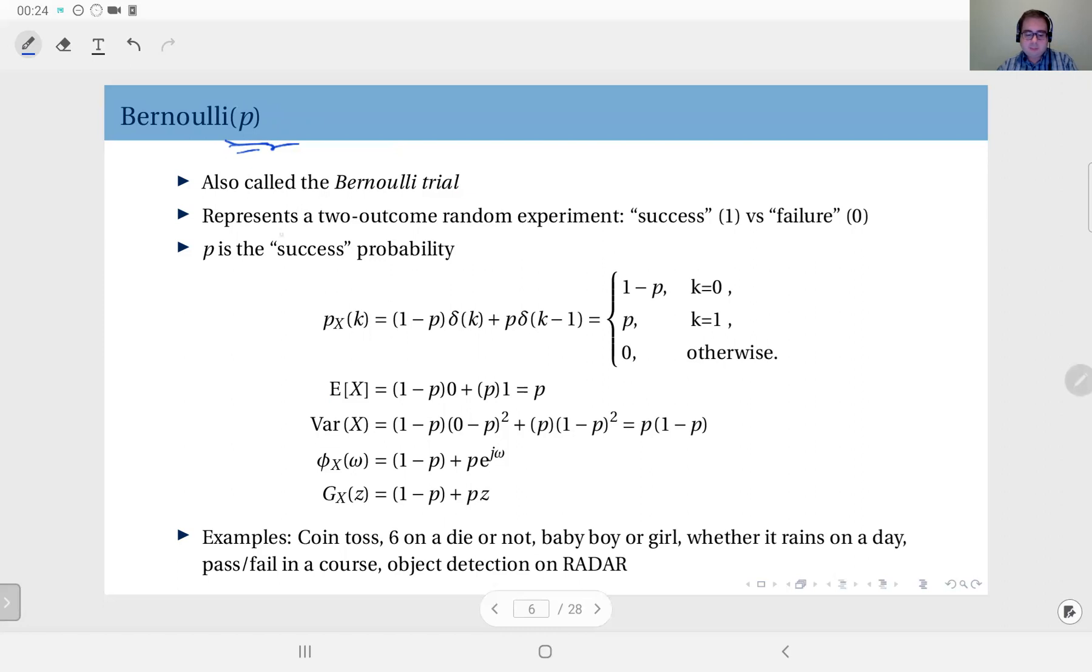Which is what? What is the Bernoulli trial? The Bernoulli trial represents a two-outcome random experiment: success versus failure. So these are the terminology we use to address these possible outcomes. For the definition of the random variable, we use the outcomes 1 and 0. The probability assigned to success, which is represented by 1, is p, and the probability we attach to failure, which is the outcome 0, is naturally 1 minus p.